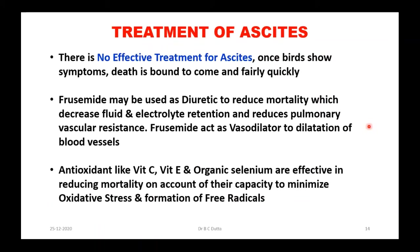There is no effective treatment for ascites. Once symptoms appear, death is bound to come fairly quickly. A diuretic like Lasix tablet acts by decreasing fluid and electrolyte retention and reducing pulmonary vascular resistance, which can help reduce mortality. Antioxidants like vitamin E, vitamin C, and organic selenium are effective in reducing mortality a little, on account of their capacity to minimize oxidative stress and formation of free radicals.